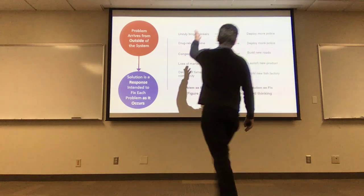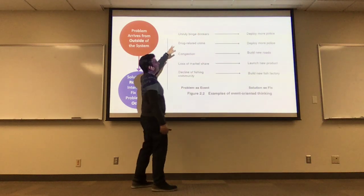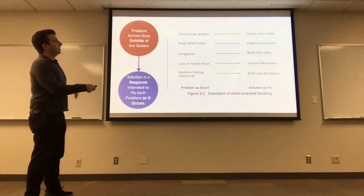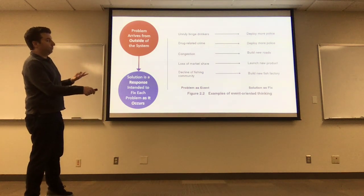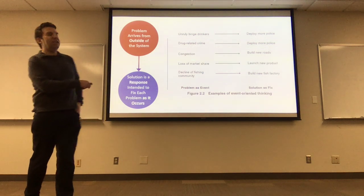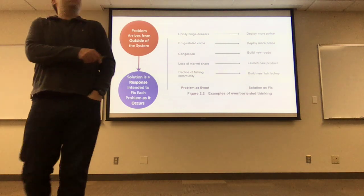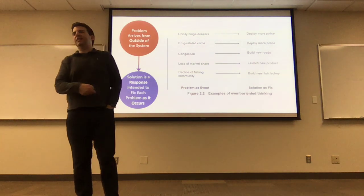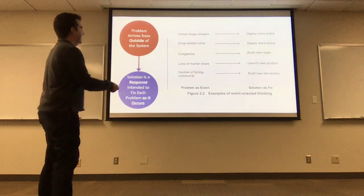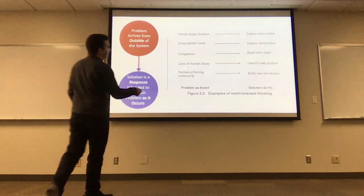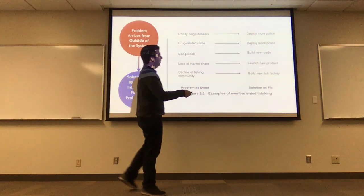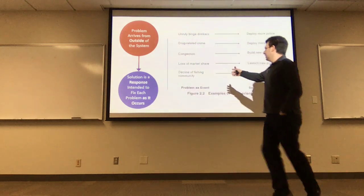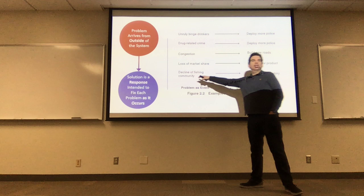They have examples here. If you have unruly binge drinkers, maybe you deploy more police. If you've got a lot of drug-related crime, maybe you deploy more police. Maybe if you've got congestion, just build new roads, and that will resolve the congestion. Loss of market share — put out a new product and you'll get more market share. A decline of fishing in the community — build a new fish factory, and people will work there, and that will increase the fishing community again.